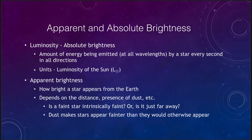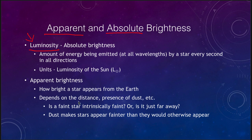When we talk about the brightness of a star there are two specific things we want to look at. One is the apparent brightness of a star and the other is the absolute brightness. These two are quite different. Let's start off with the absolute brightness, which astronomers also call the luminosity of a star.